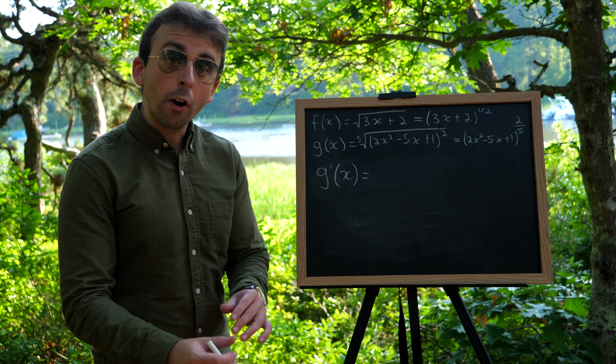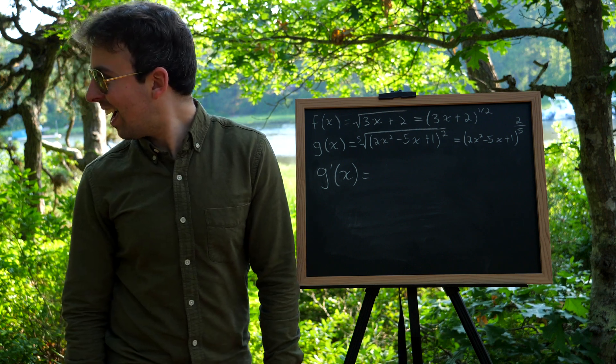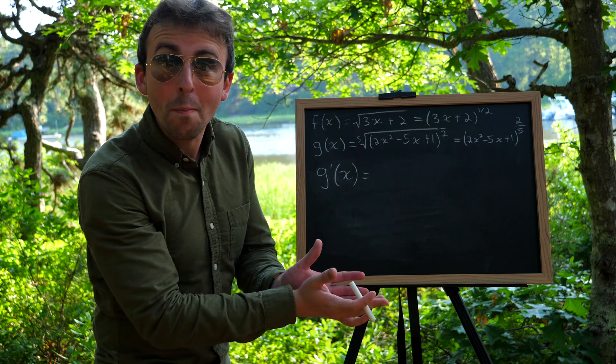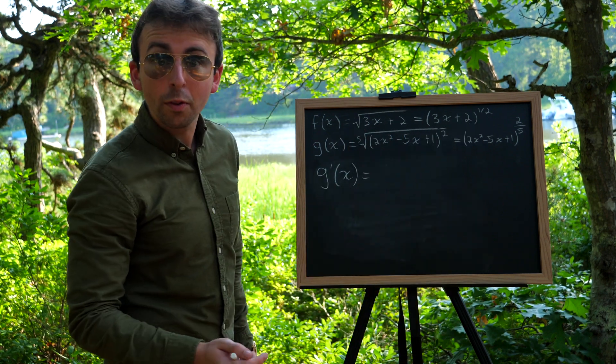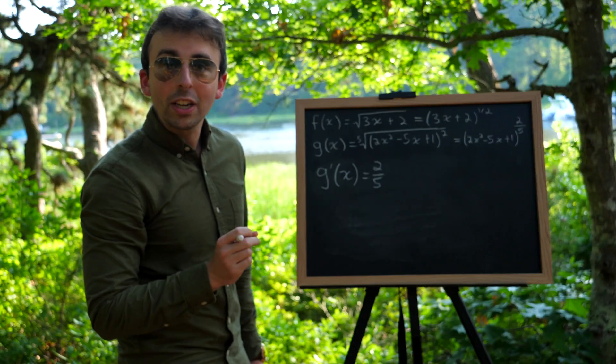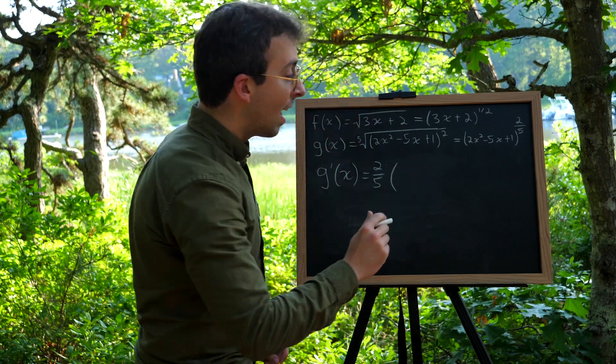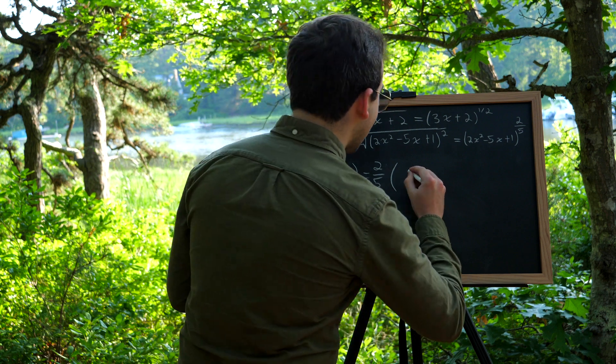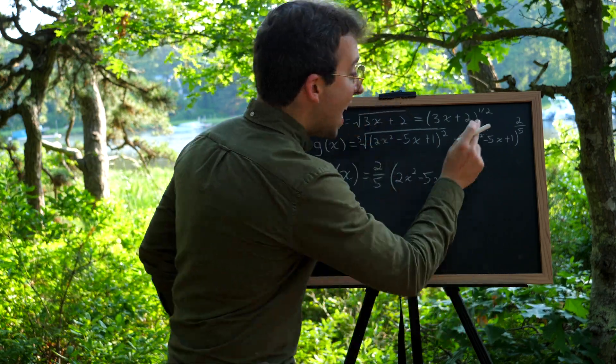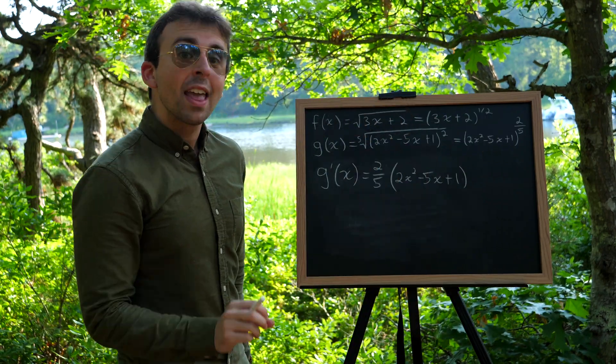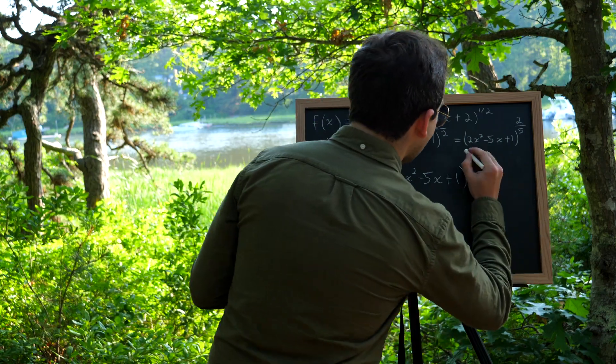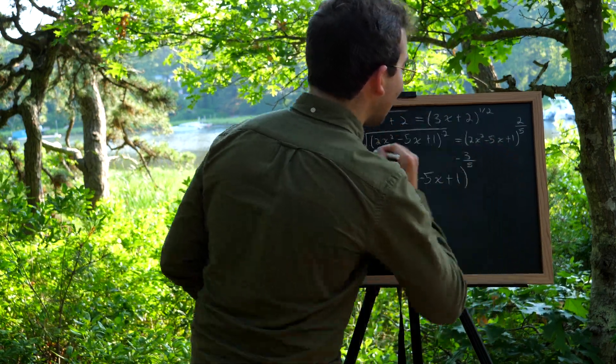So for the chain rule, we start by taking the derivative of the outside function. And the outside function, it's a thing to a power. So we have to drop that power of 2 fifths down as a factor. And then this thing which was being raised to the power of 2 fifths, the inside does not get changed. Remember that. That's what I see a lot of people screw up. So we still have 2x squared minus 5x plus 1. That power of 2 fifths gets reduced by 1. Be careful here. 2 fifths minus 5 fifths is negative 3 fifths. So that's the new exponent is negative 3 fifths.